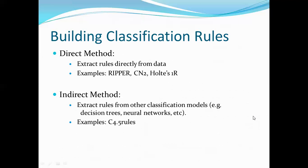In the indirect method, rules are extracted from other classification methods. A decision tree or neural network is used, and rules are derived from those models. One example of indirect method is C4.5 rules.